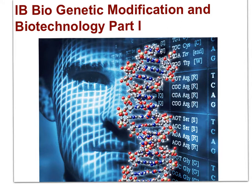IB Bio Genetic Modification Biotechnology Part 1 examines three areas: the human genome project, cloning, and stem cells. The essential idea is that biologists have developed techniques for artificial manipulation of DNA, cells, and organisms.